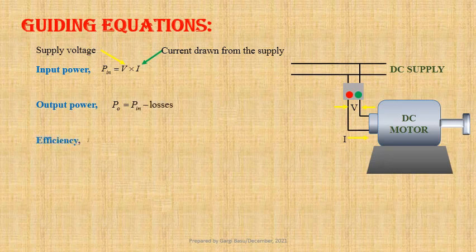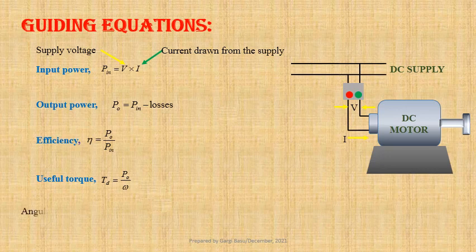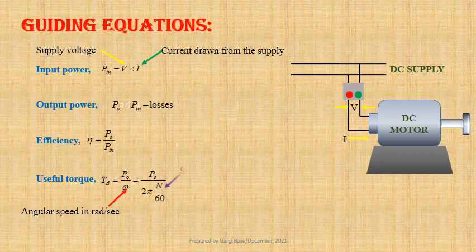Efficiency of the motor: eta equals P_o divided by P_in. Useful torque: T_d equals P_o divided by omega, where omega is the angular speed of the motor in radians per second. T_d may be written as P_o divided by 2*pi*N/60, where N is the speed of the motor in revolutions per minute. Therefore, output power P_o equals T_d into 2*pi*N/60.